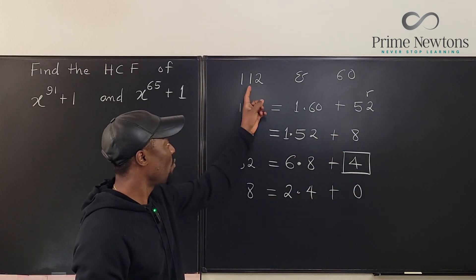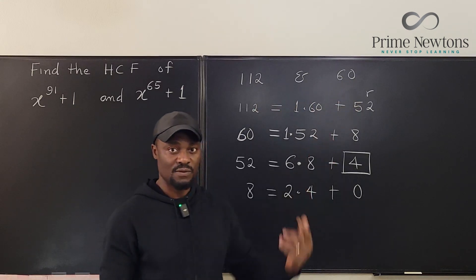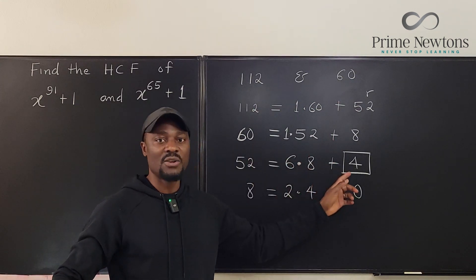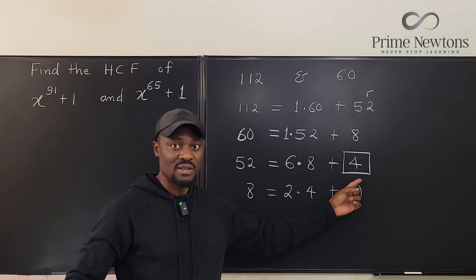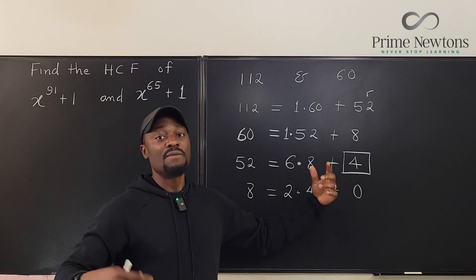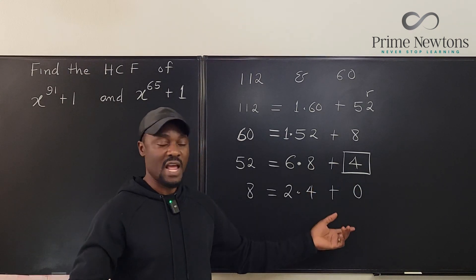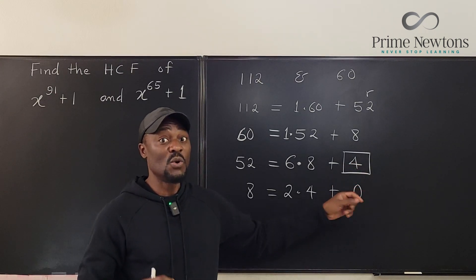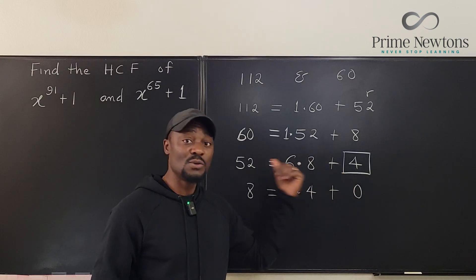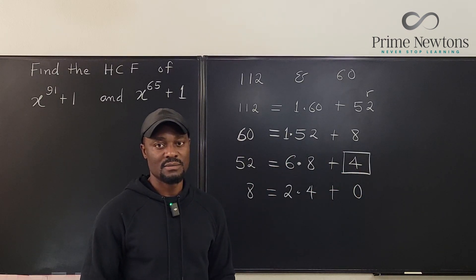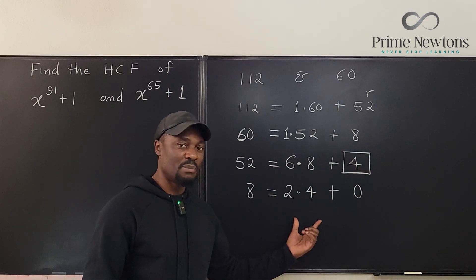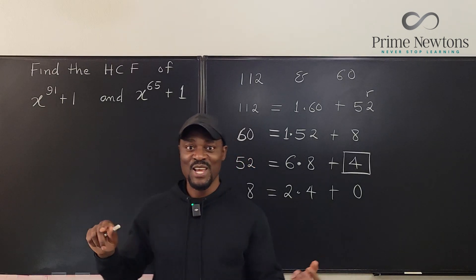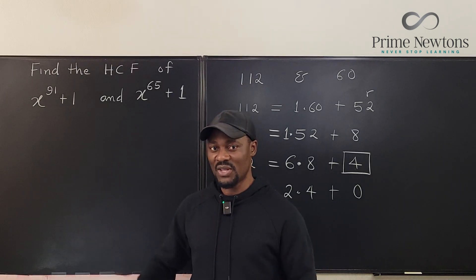The greatest common factor here is 4 — the biggest number that divides both 112 and 60. Pick any two random numbers, use this algorithm, and you will get an answer. If they're relatively prime you'll get 1, meaning no other number divides both except 1. Now how do we apply this to our polynomial problem? Exactly what I did here is what we're going to do, using the Euclidean algorithm.